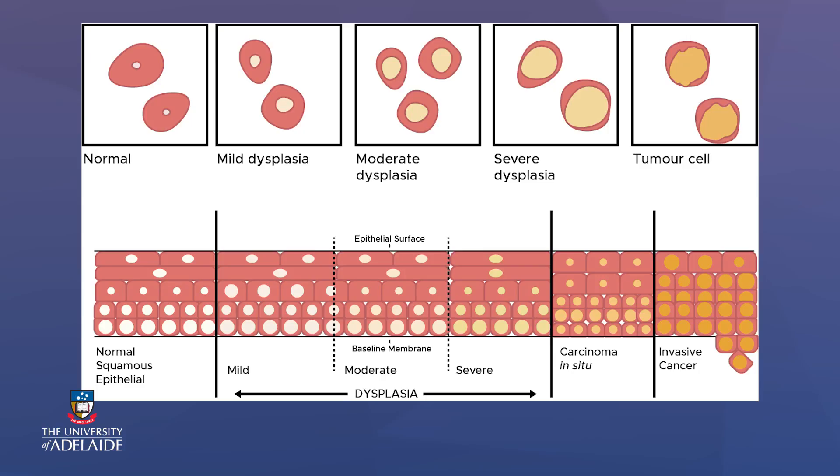This area is lined with specialised cells called squamous epithelial cells, which are continually renewed during a female's life. Normally, these cells grow and multiply in an orderly way. However, in rare circumstances, the cells undergo changes and can become cancerous — meaning the cells are dividing and growing in an unregulated, uncontrolled manner.